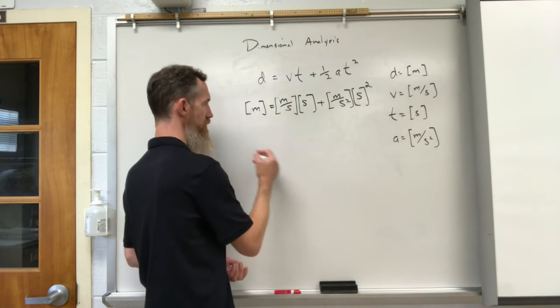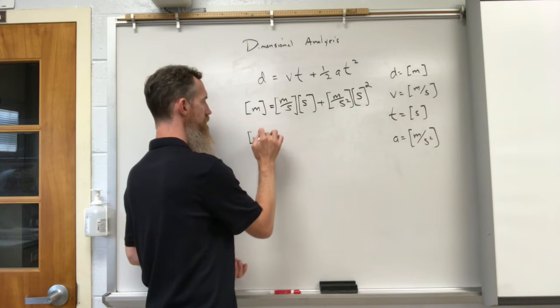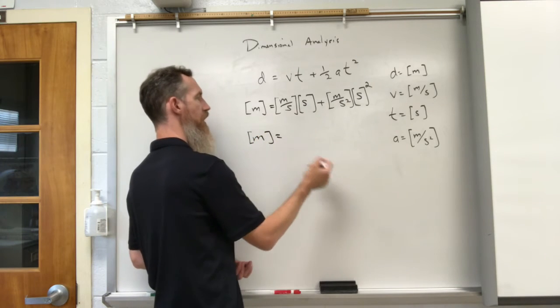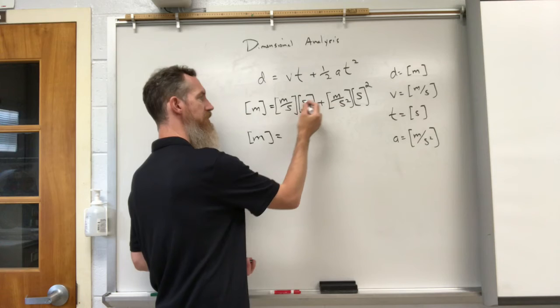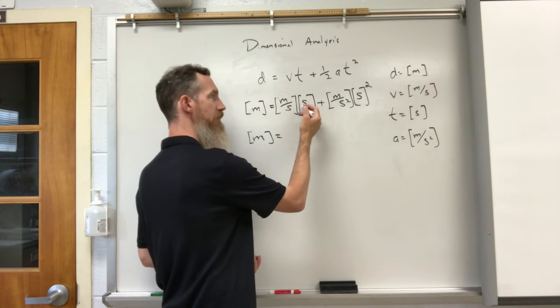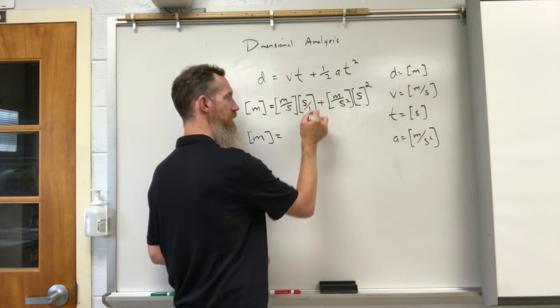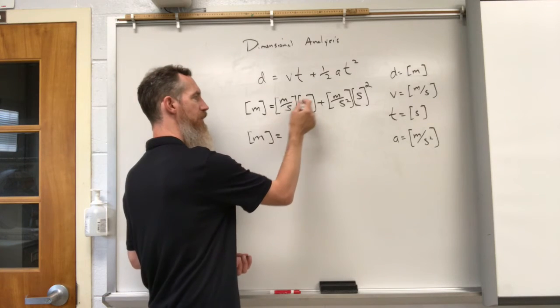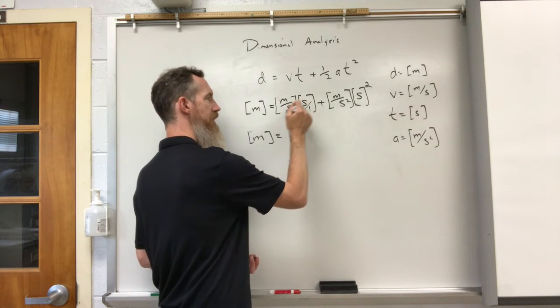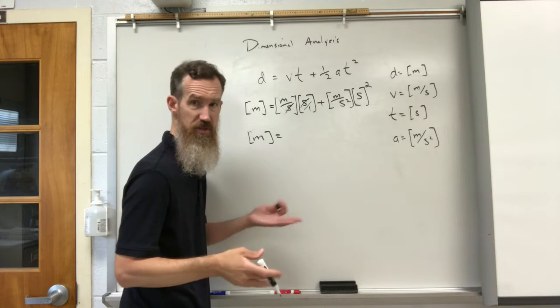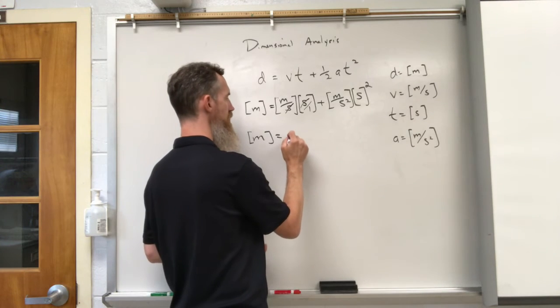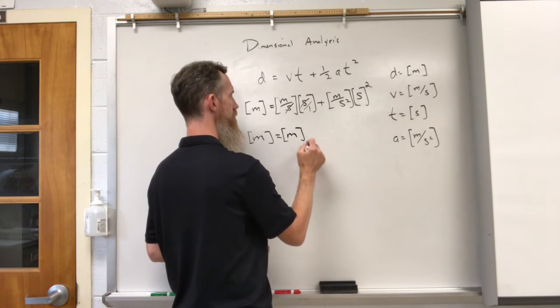What happens, as you can see, is meters equals... This seconds on the bottom, this seconds is on the top of a fraction. Remember, anything by itself could be a fraction if you put it over one. So a top of a fraction, a bottom of a fraction, they're going to cancel out. Those seconds cancel, and you're left with just meters. Plus.